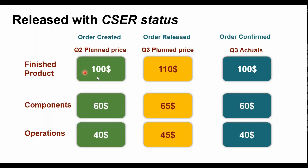Let's take an example. This is a finished product where we can see $100 is the standard price that has been calculated based on the Q2 plan cost estimate. If we look at the breakup of that $100, it's a combination of components and operations — which have activity types. $60 is for the components and $40 is for the activities. So $100 is the planned cost estimate released for the product in period Q2.